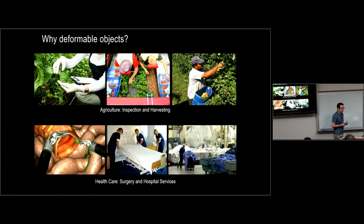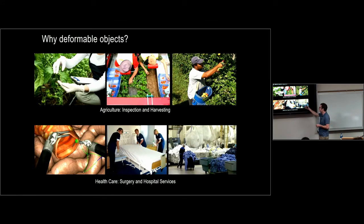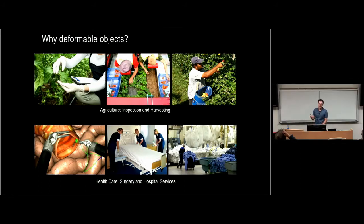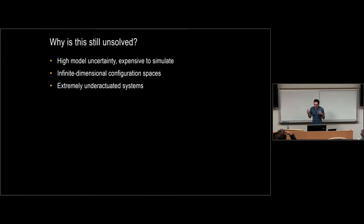Likewise, in agriculture and healthcare there are many applications for deformable object manipulation — from inspection and harvesting to surgery and making hospital beds. How many hospital beds are made in the US alone every single day? They're all made by hand. How much hospital laundry is done every day, with people loading machines by hand? If we can create robots with these capabilities, we can make these tasks more efficient and require less labor.